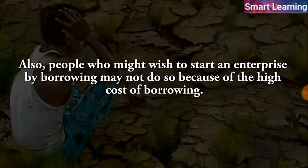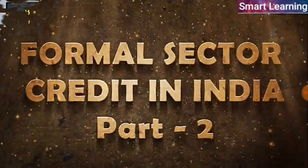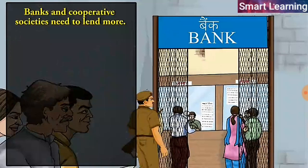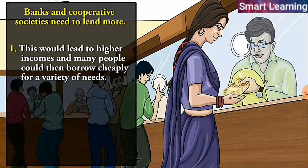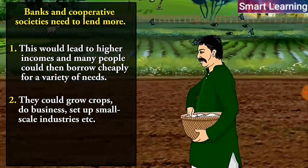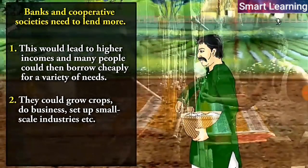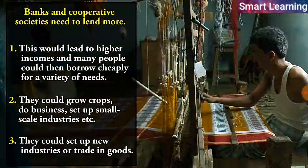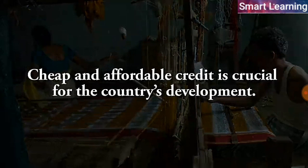Also, people who might wish to start an enterprise by borrowing may not do so because of the high cost of borrowing. For these reasons, banks and cooperative societies need to lend more. This would lead to higher incomes and many people could then borrow cheaply for a variety of needs. They could grow crops, do business, set up small-scale industries etc. They could set up new industries or trade in goods.